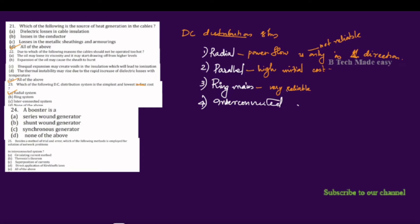The interconnected system links substations and generating stations together. The system ensures reliability in the event of a transmission failure.